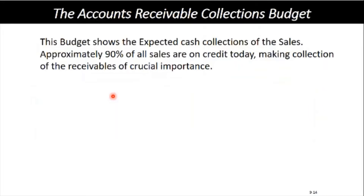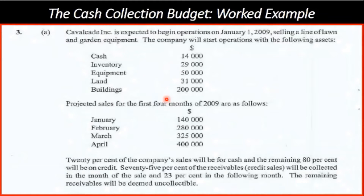The accounts receivable collections budget shows the expected cash collections of the sales. From your past papers we have the Cavalcade Incorporated example. Looking at the sales budget and the collections — projected sales for the four months of 2009 are as follows: January $140,000, February $280,000, March $325,000, and April $400,000.